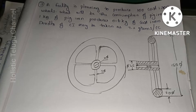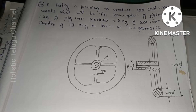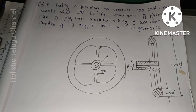A factory produces 100 cast iron wheels. 1 kg of pig iron produces 0.6 kg of cast iron. The density of cast iron may be taken as 7.2 grams per cc. We need to find how much pig iron is required.